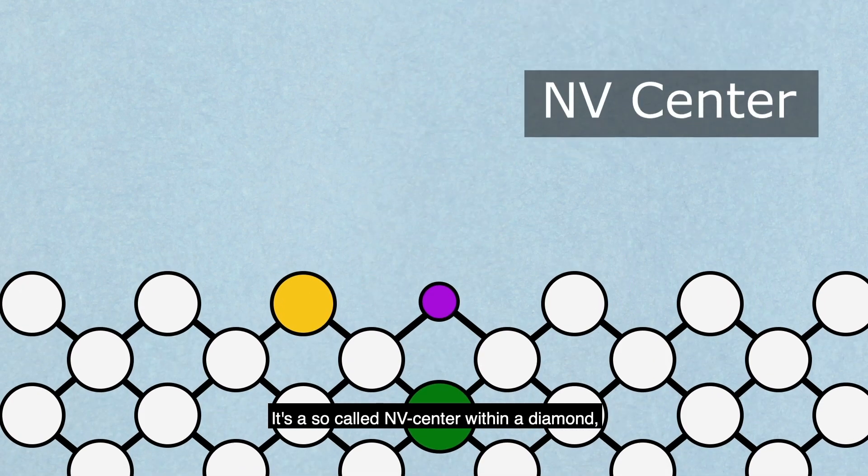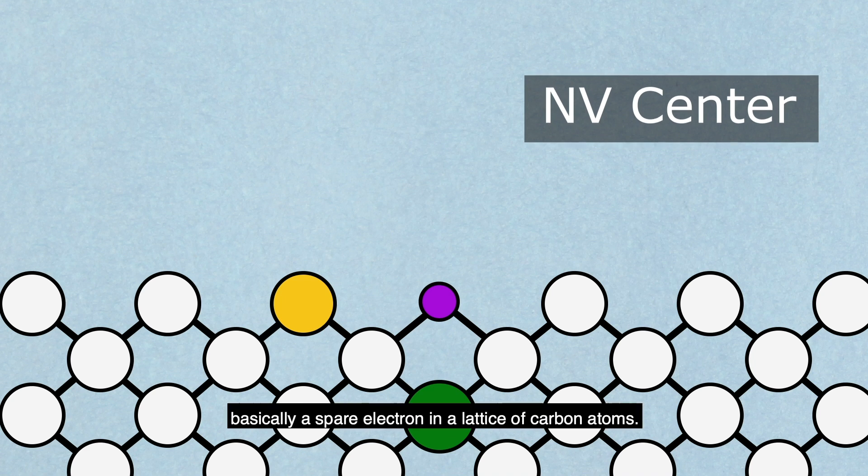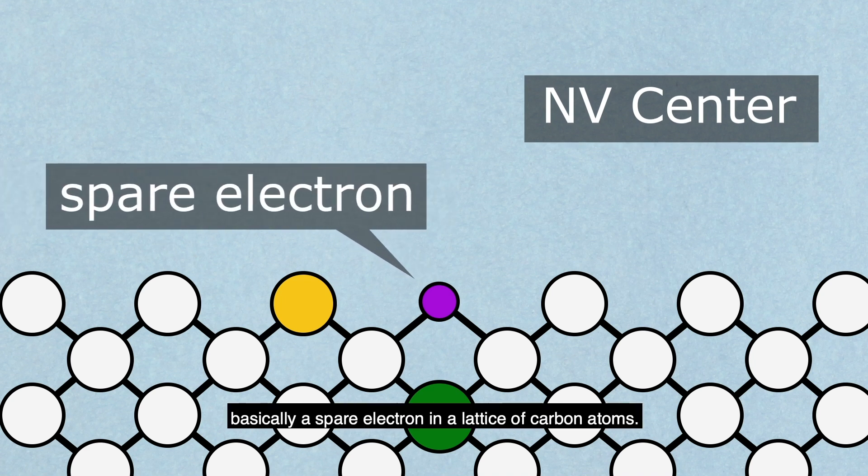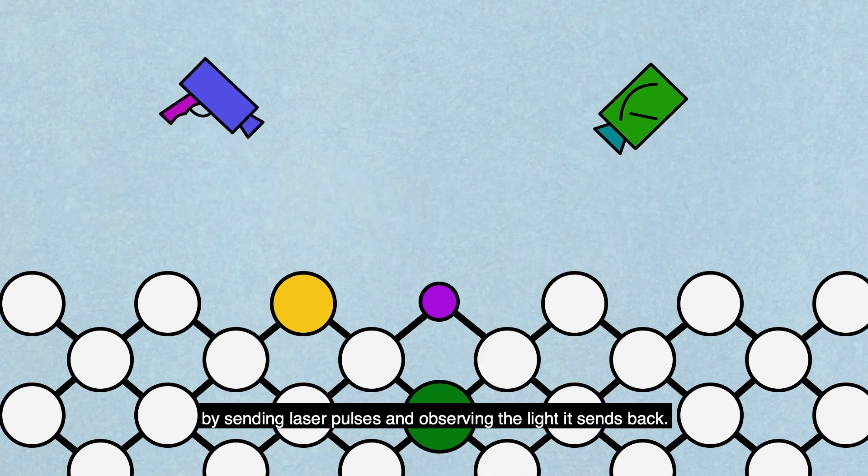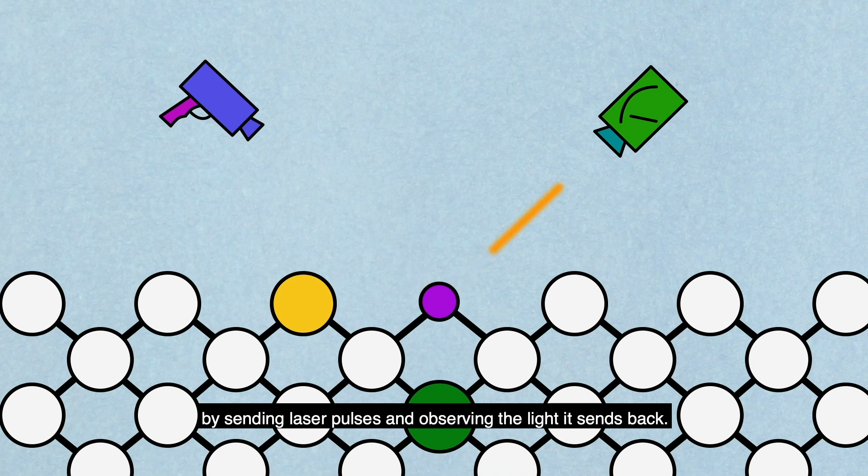It's a so-called NV center within a diamond, basically a spare electron in a lattice of carbon atoms. We can detect this individual electron spin by sending laser pulses and observing the light it sends back.